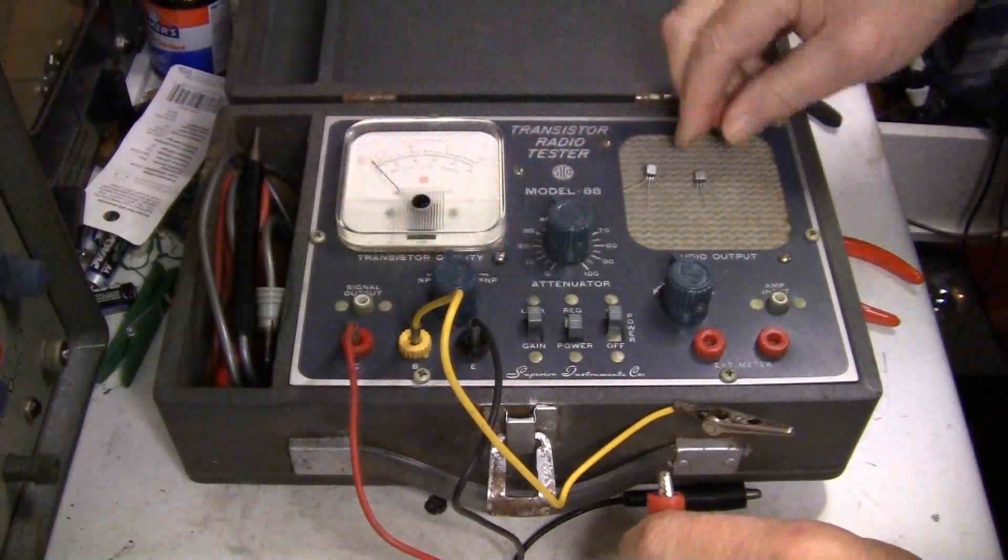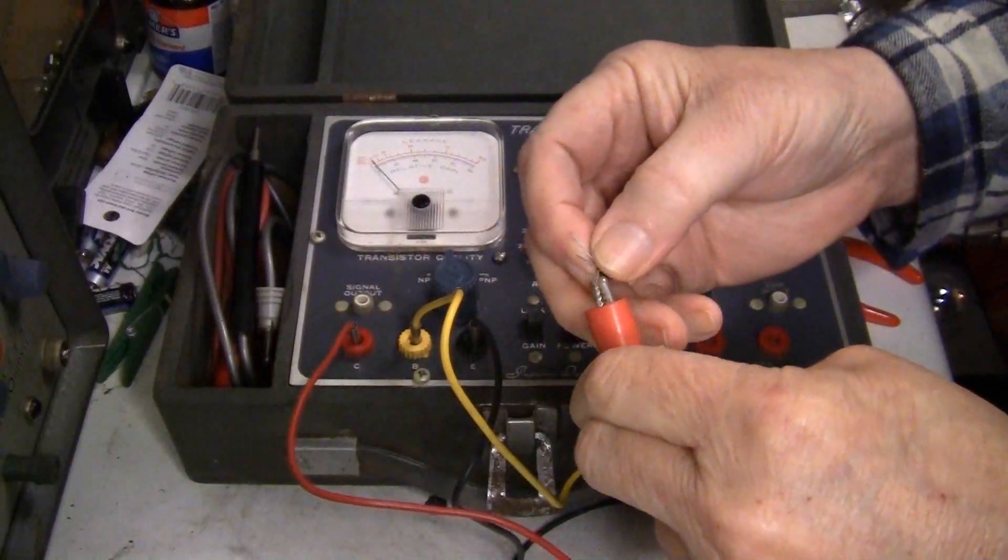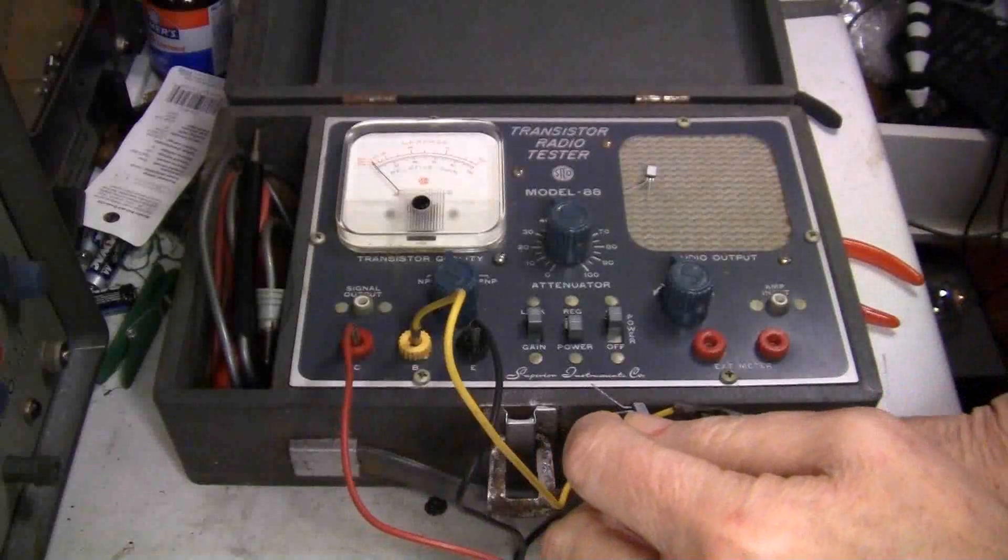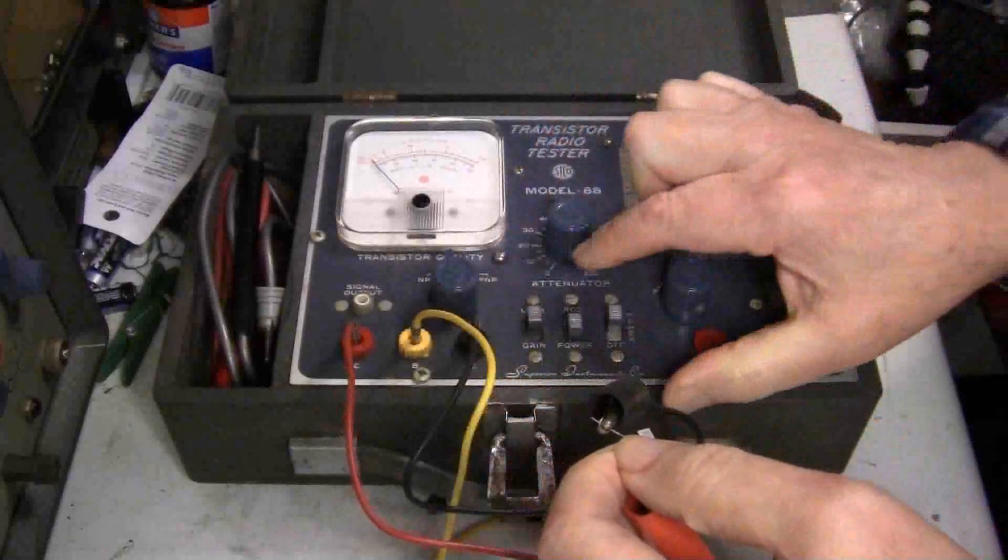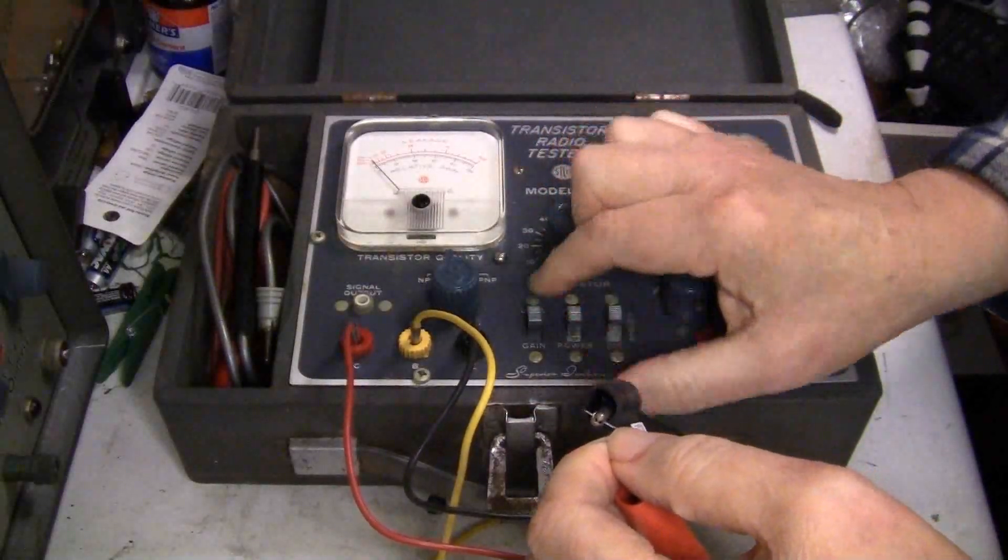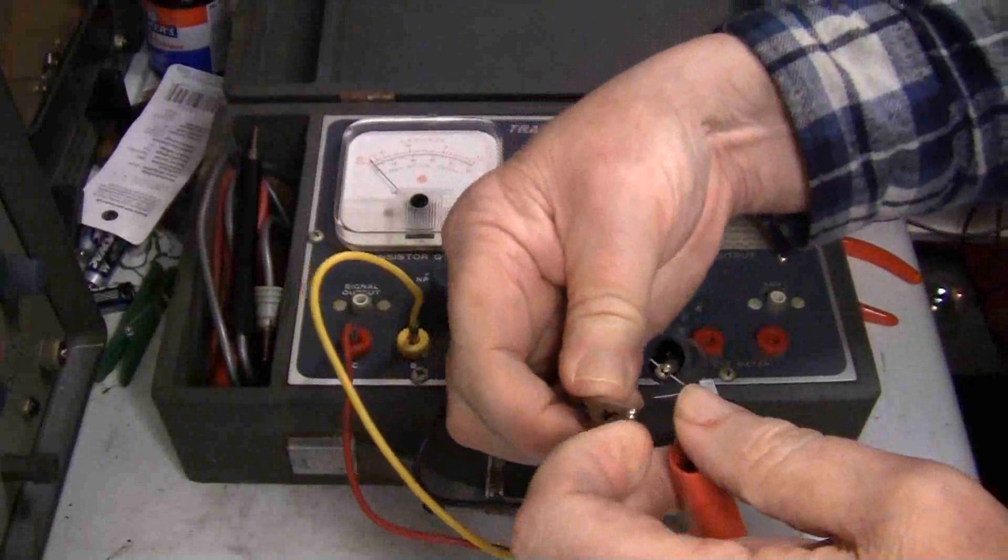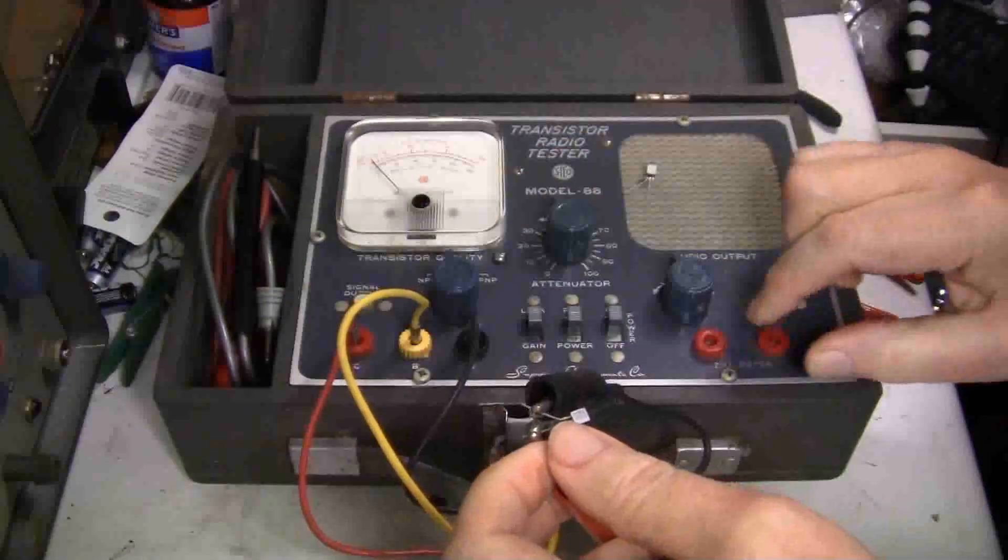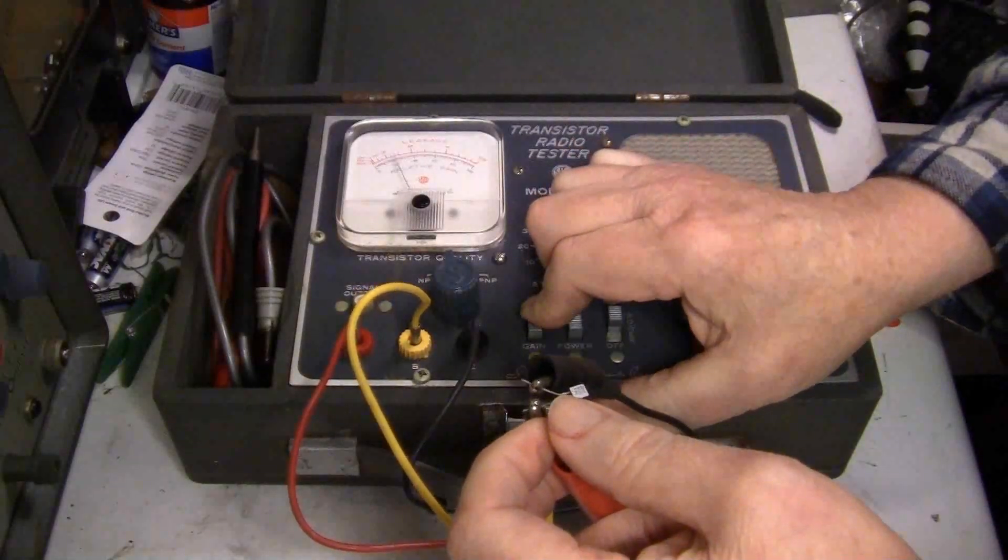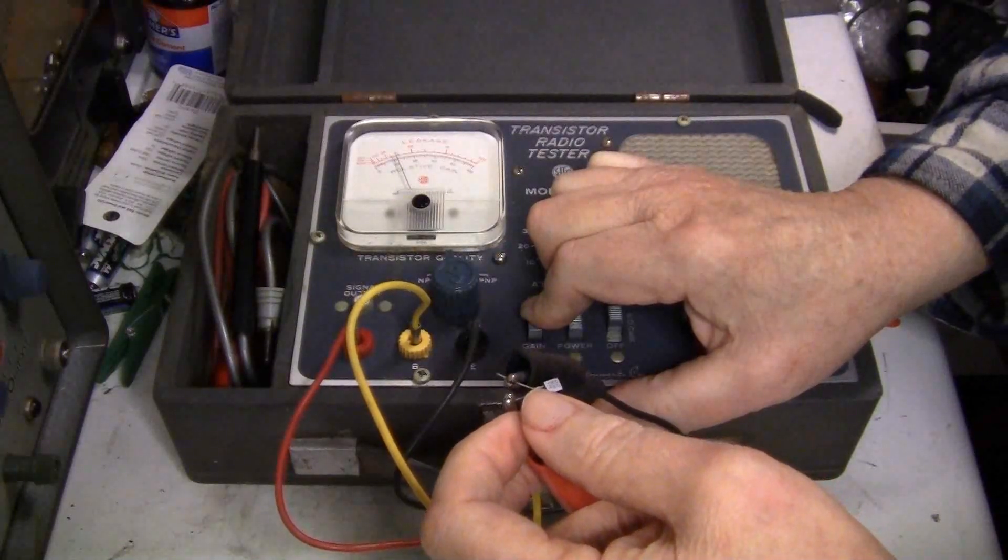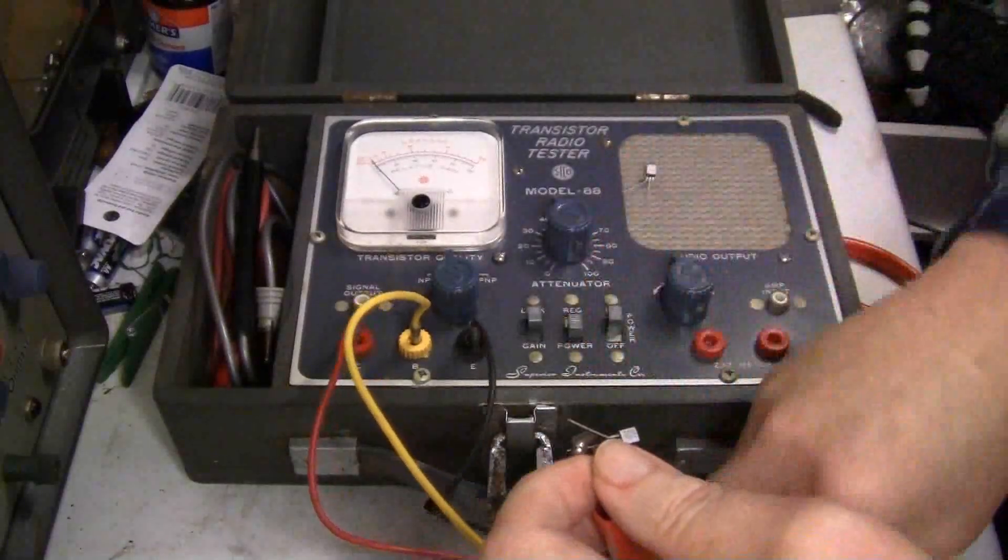Now we'll do the NPN. Lead configuration is the same. Okay, leak test. That's good. I'll hook up the base. I'll scale again. And the beta of the NPN is a little over 200. Both the transistors are good.